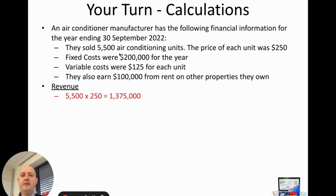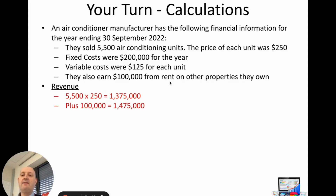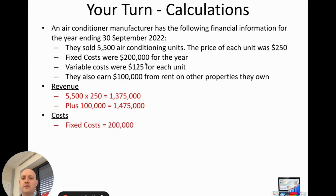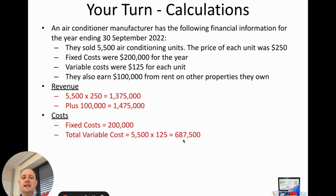For revenue, we take 5,500 units multiplied by $250, giving $1,375,000. We then add the $100,000 from rent on other properties — note that this is revenue, not a cost, because they own those properties and receive income from them — for a total revenue of $1,475,000. Fixed costs are simply $200,000 as given. Variable cost is 5,500 units multiplied by $125, giving $687,500.